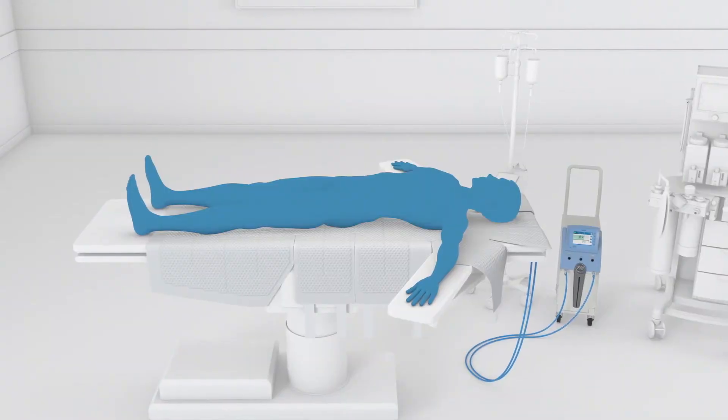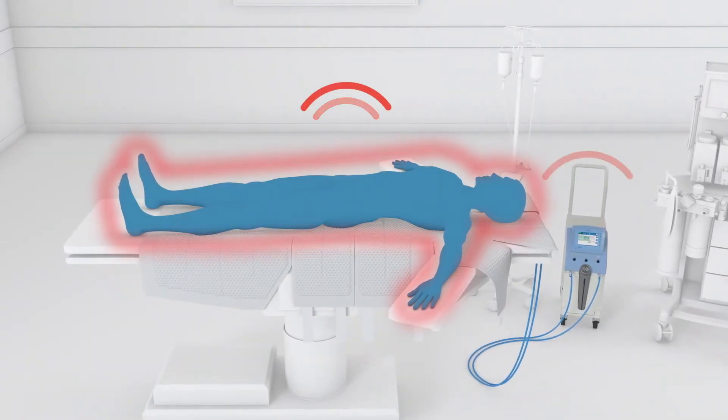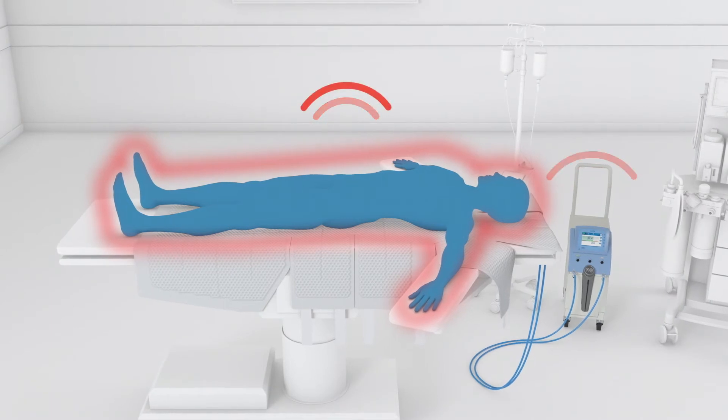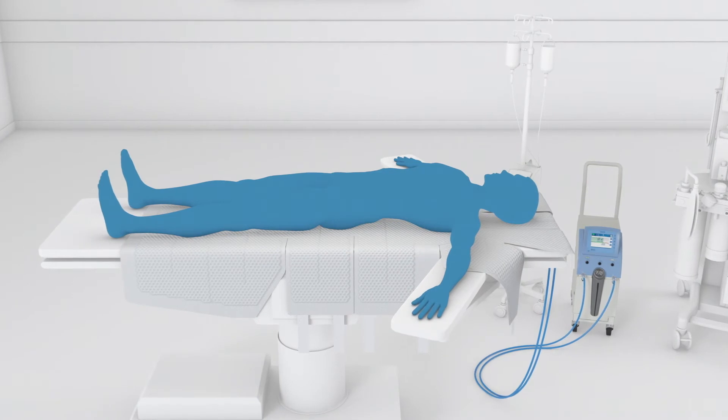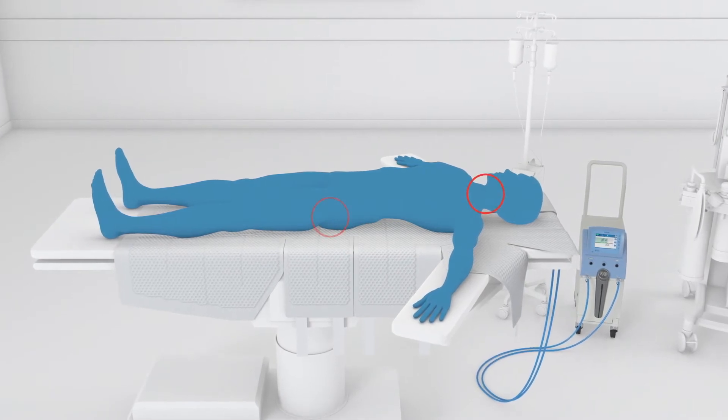In the default normothermia mode, Alon relies on constant patient temperature feedback from both core and skin probes to maintain normothermia. Core temperature can be measured by esophageal or rectal temperature.